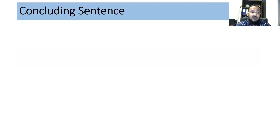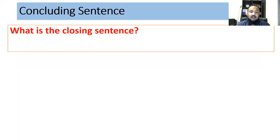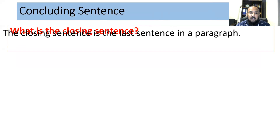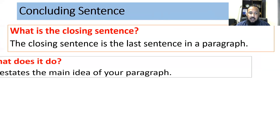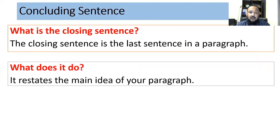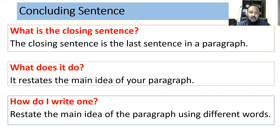Moving towards the three questions about it. What is the closing sentence? The closing sentence is the last sentence in a paragraph. What does it do? It restates the main idea of your paragraph. How do I write one? Restate the main idea of the paragraph using different words — it conveys the same meaning again but in a different way.